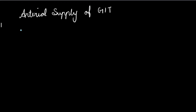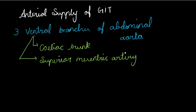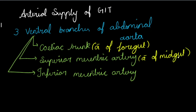Hello everyone. In our anatomy on blackboard series we had discussed regarding the whole GIT, and now we are moving towards the arterial supply of GIT. The GIT receives its major arterial supply through three ventral branches of the abdominal aorta: the celiac trunk, the superior mesenteric artery, and the inferior mesenteric artery. These are also called the artery of foregut, artery of midgut, and artery of hindgut respectively. Today we will be exclusively talking about the celiac trunk and its branches.